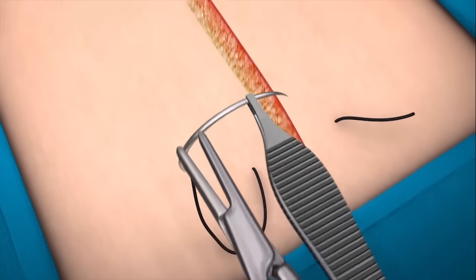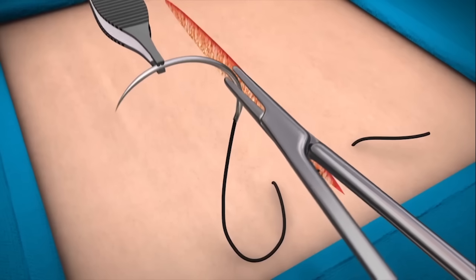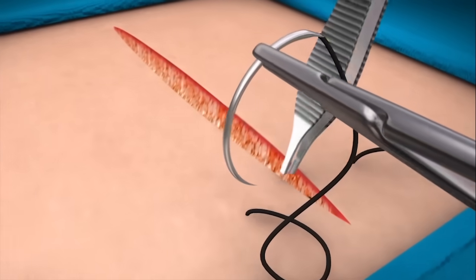Hold the needle with the forceps and rotate it in the needle holder to prepare for the backhand part of the mattress suture.